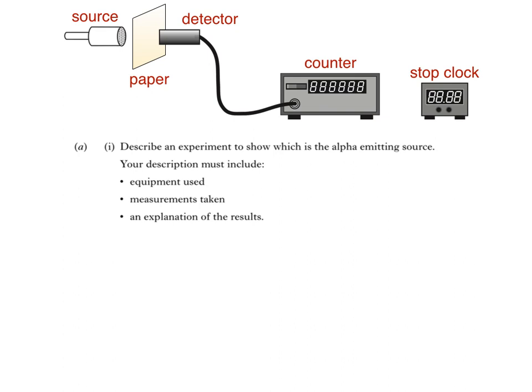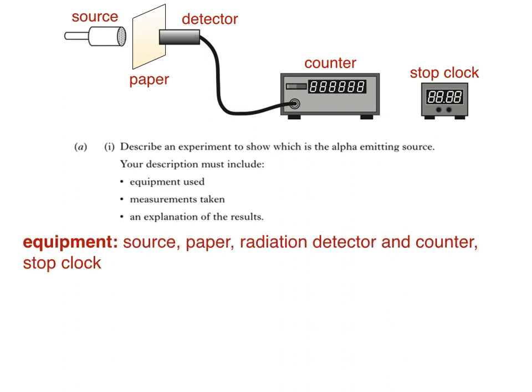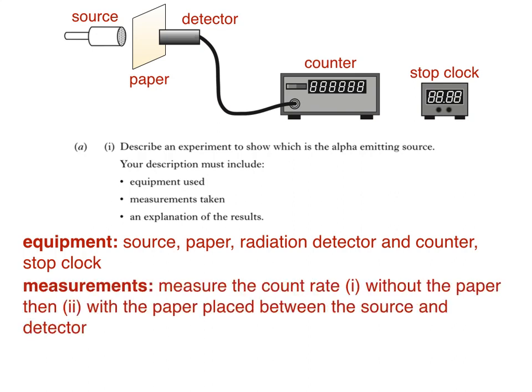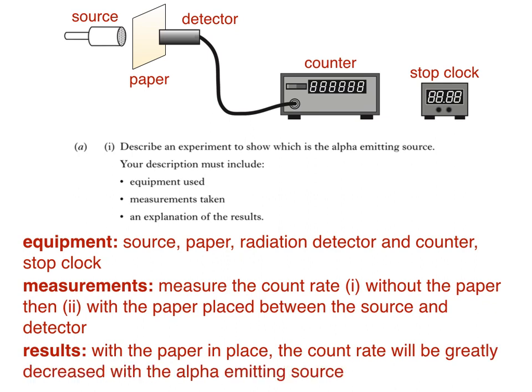So here's our answer. For equipment, we'd need the source, a piece of paper, a detector and counter, and a stop clock. We'd measure the count rate without the paper, then again with the piece of paper placed between the source and detector. Finally, we'd know which was the alpha source, because with the paper in place, the count rate would be greatly reduced.